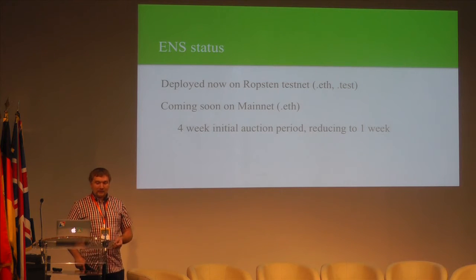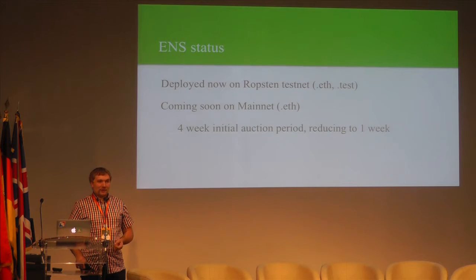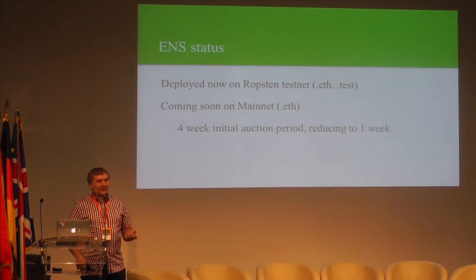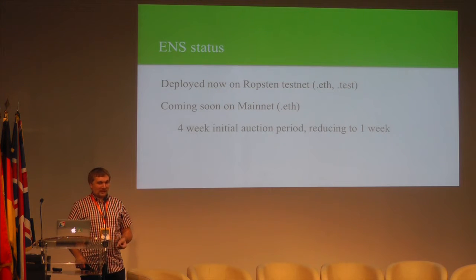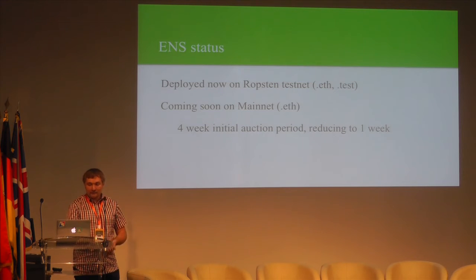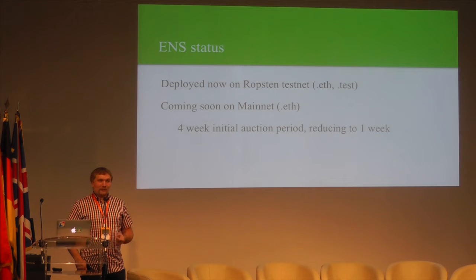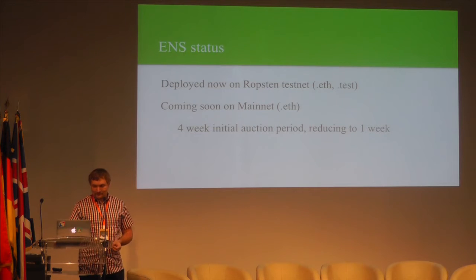The current status of ENS: it's been deployed on the Ropsten Testnet since DevCon 2. We currently have the .eth domain using a prototype version of the auction registrar and the .test domain. It's coming soon on Mainnet. When deployed on Mainnet, initially there will be a four-week auction period to make sure everyone who wants in on any initial land rush is well aware of it. Auctions will end four weeks after deployment or one week after they start, whichever is later. At or shortly after launch, we're optimistic we'll have integration with Mist, MetaMask, and MyEtherWallet.